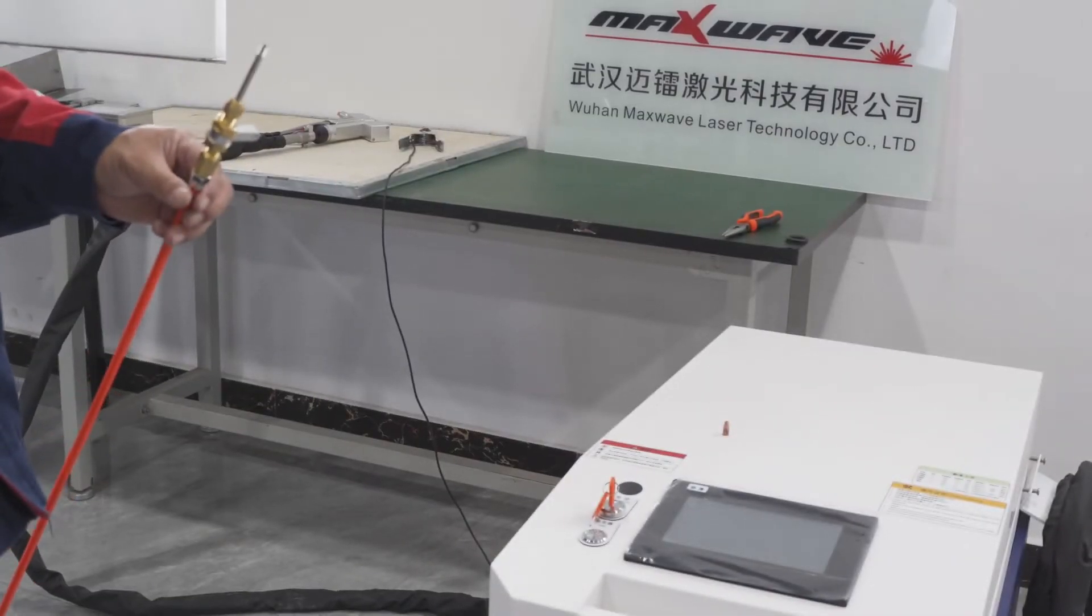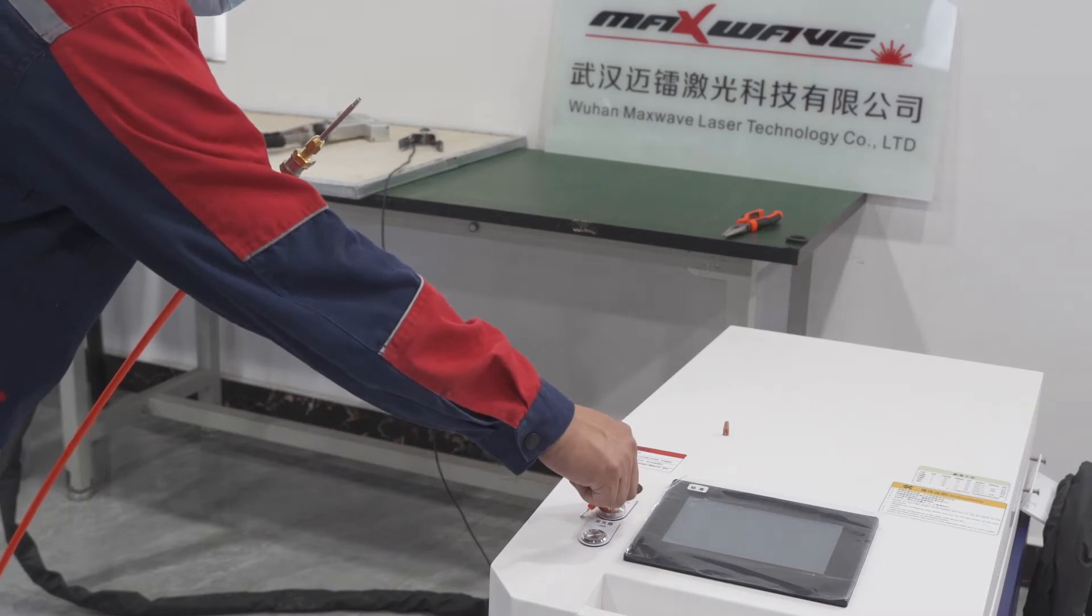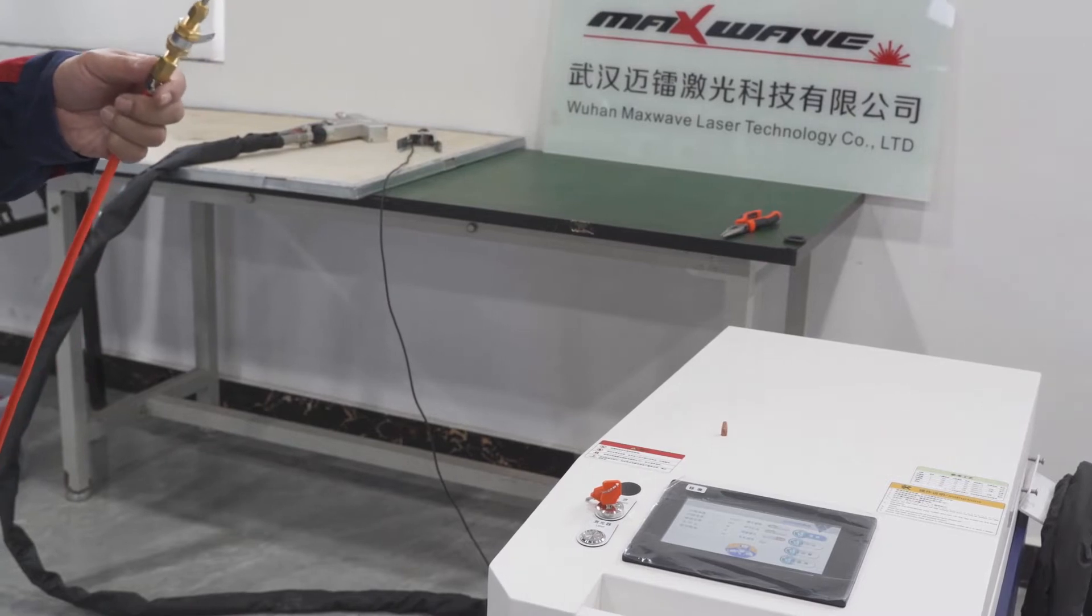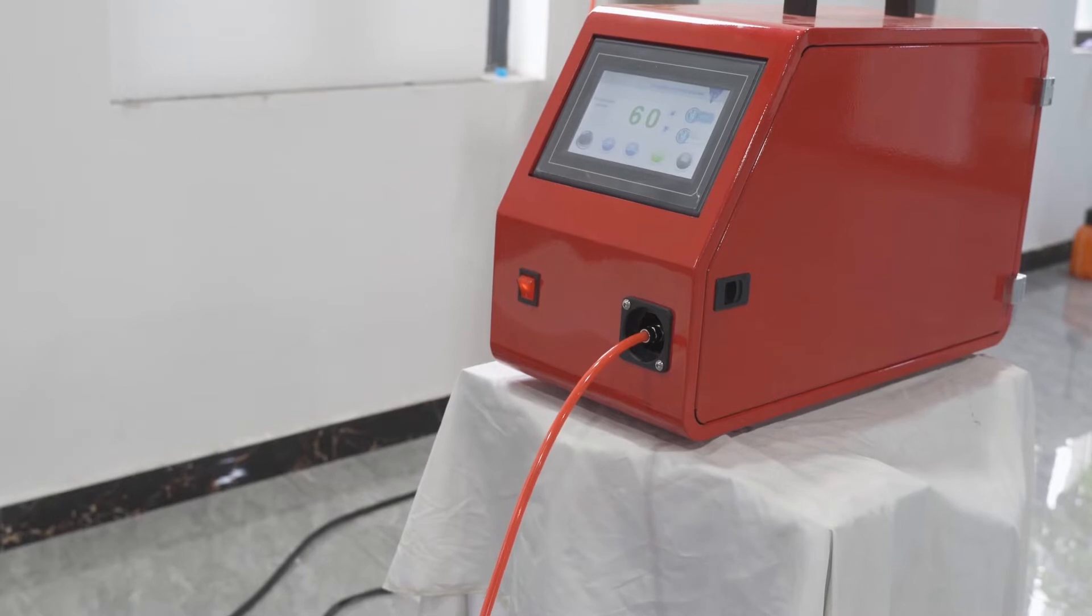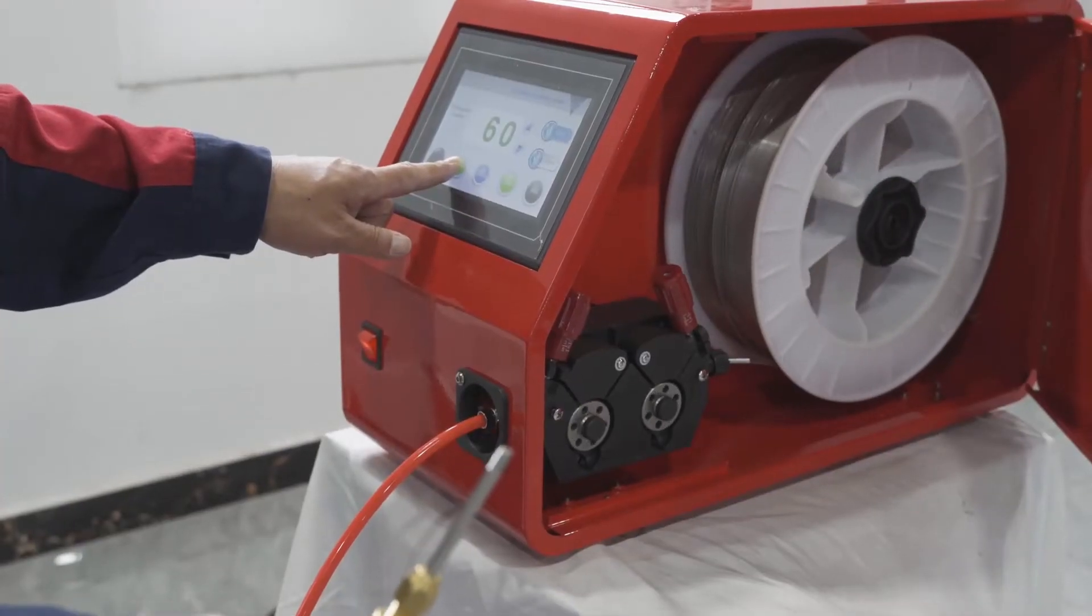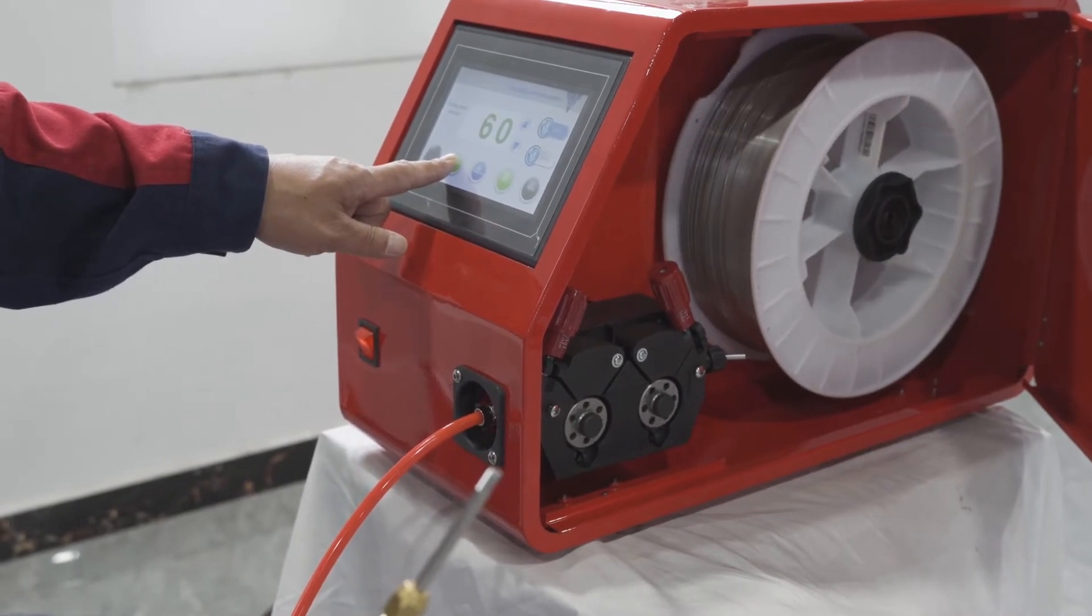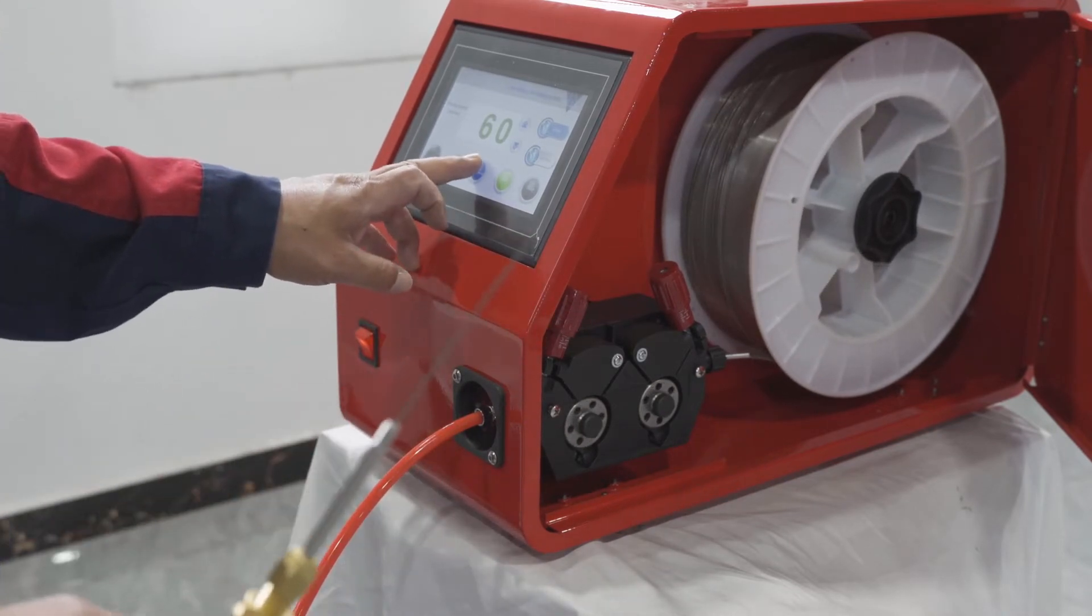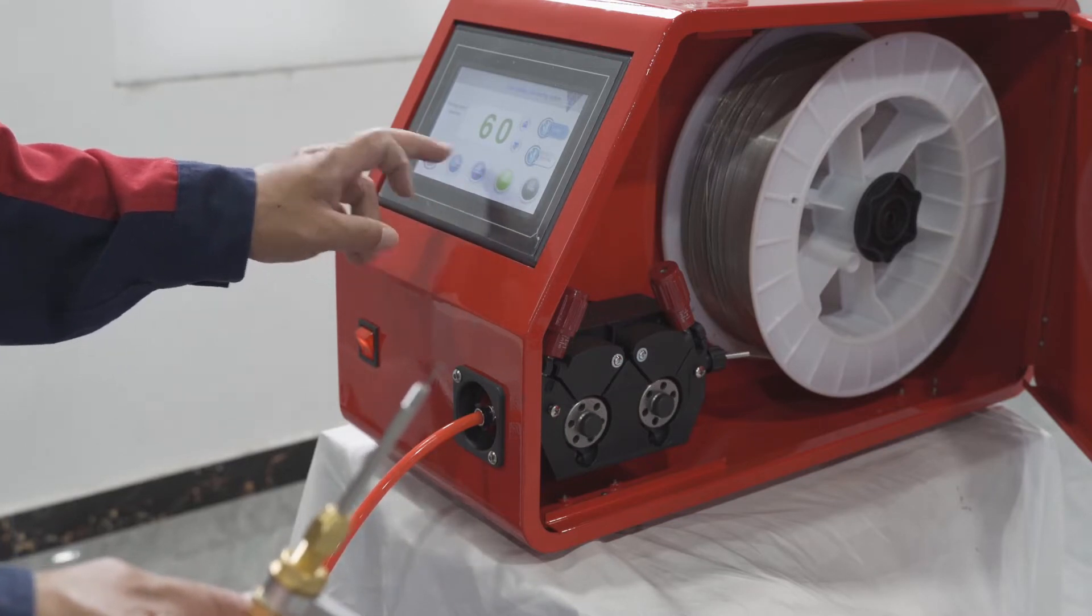Now we will start the machine and give power to the weld feeder, then send the weld from the nozzle of the weld tube. Now the weld is sent out from the plastic tube.